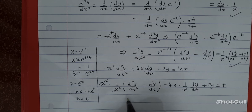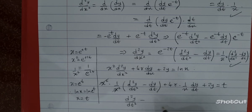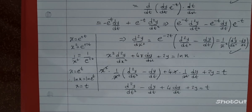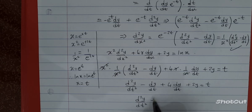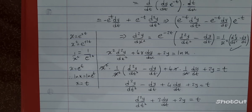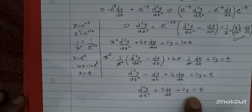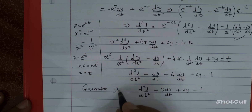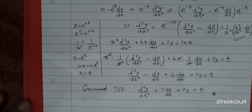Simplifying: the x squared terms cancel, leaving d²y/dt² minus dy/dt plus 4dy/dt plus 2y equals t. Combining the dy/dt terms gives d²y/dt² plus 3dy/dt plus 2y equals t. This is our new generated differential equation, which can now be solved. Hope this helps, take care.